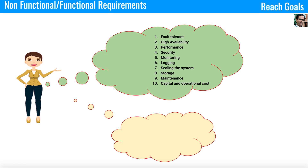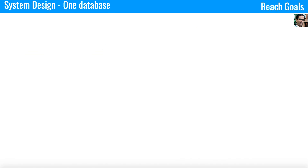Each non-functional requirement can be achieved in multiple ways and I will cover them in detail in future videos. I also suggest you look into some other videos where I talked about fault tolerance, high availability, and many more. The functional scope of this topic is to get the top 10 songs, or something like get trending songs. Taking this as a starting point, we will build a robust, highly scalable, and highly available system.